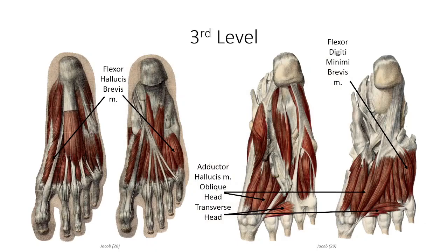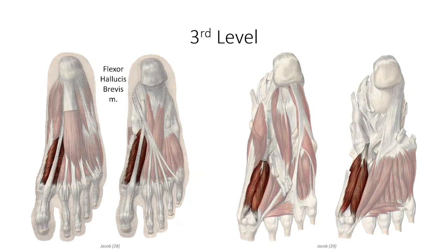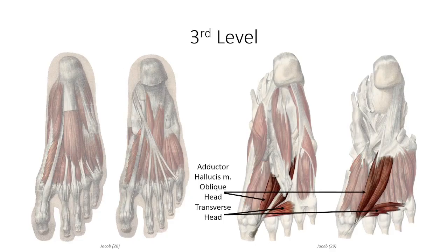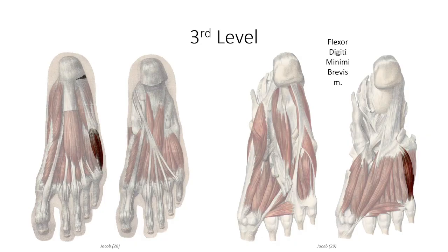The third plantar layer begins with flexor hallucis brevis, originating off the cuboid and lateral cuneiform bones and inserting bilaterally on the base of the proximal phalanx. As with flexor pollicis brevis in the hand, it is a flexor of the great toe up to the metatarsophalangeal joint. Next is adductor hallucis, which originates as two separate bands: the oblique head from the base of metatarsals two through four, and the transverse head from the ligaments surrounding the metatarsophalangeal joints, attaching to the lateral side of the base of the proximal phalanx of digit one. It adducts the great toe and assists in maintaining the transverse arch. Third is flexor digiti minimi brevis, originating off the base of the fifth metatarsal and inserting on the base of the proximal phalanx — a flexor of the fifth digit up to the proximal interphalangeal joint.